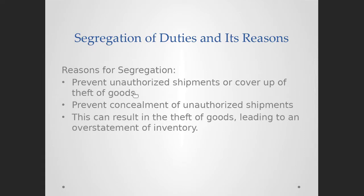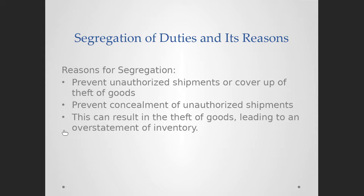More reasons for segregation include the prevention of unauthorized shipments to cover up the theft of goods, and the prevention of concealment of unauthorized shipments. Before items are shipped to the customer, they should be authorized by the supervisor or manager. If they are shipped before authorization or stolen during the shipment process, and the same person is also doing the record keeping, they can manipulate the inventory records to show that the item is still there when in reality it was stolen or shipped without authorization. Segregation of duties provides that safety net. Theft of goods can lead to an overstatement of inventory.